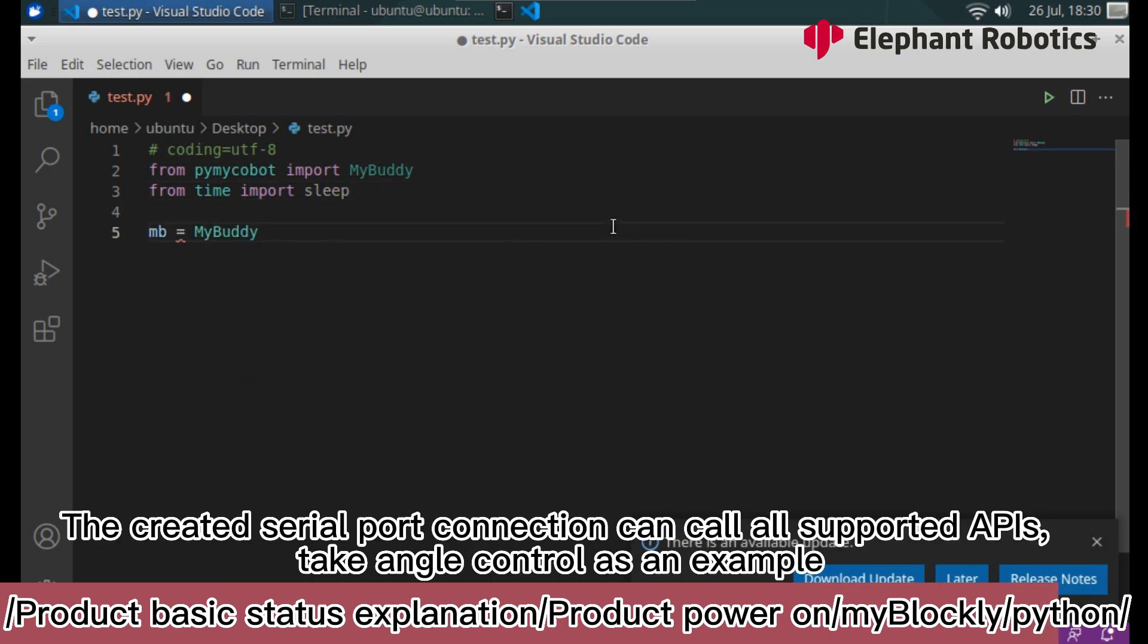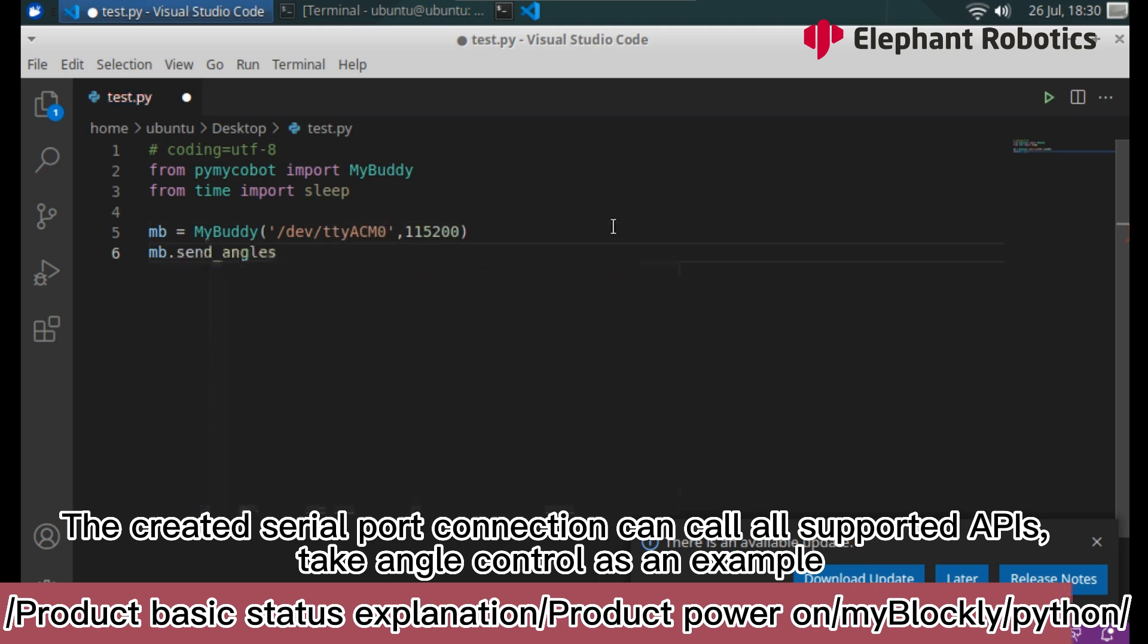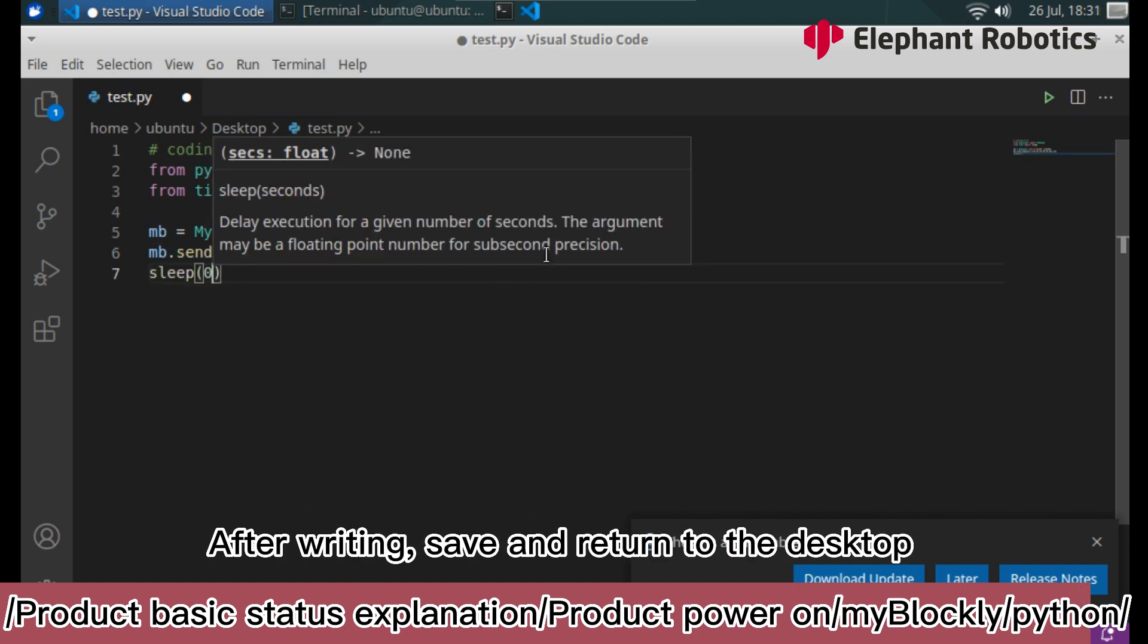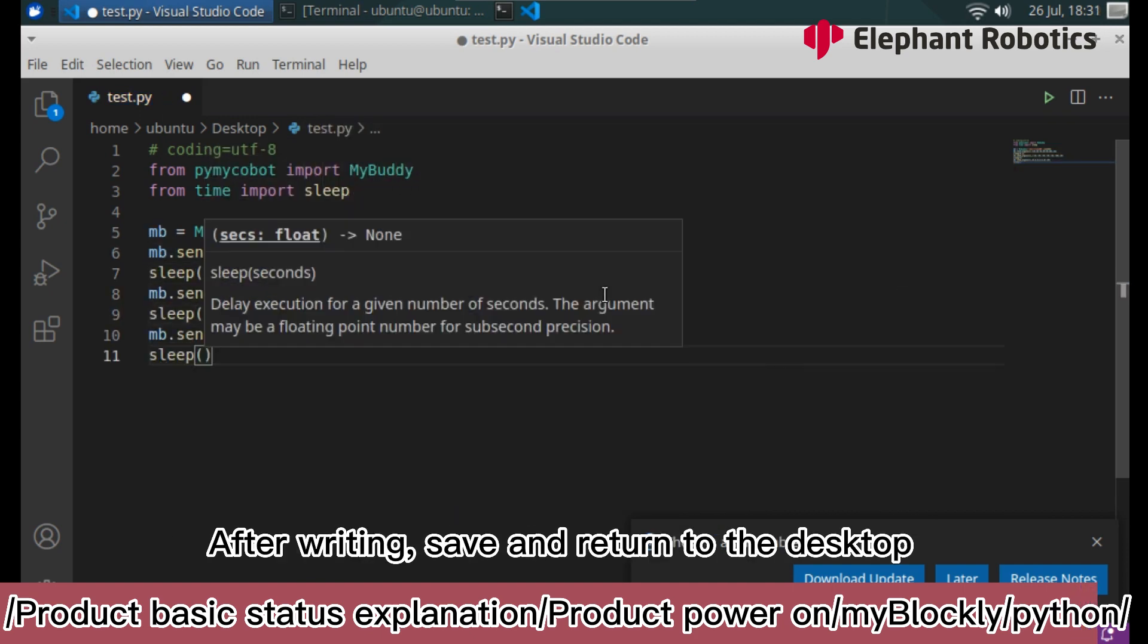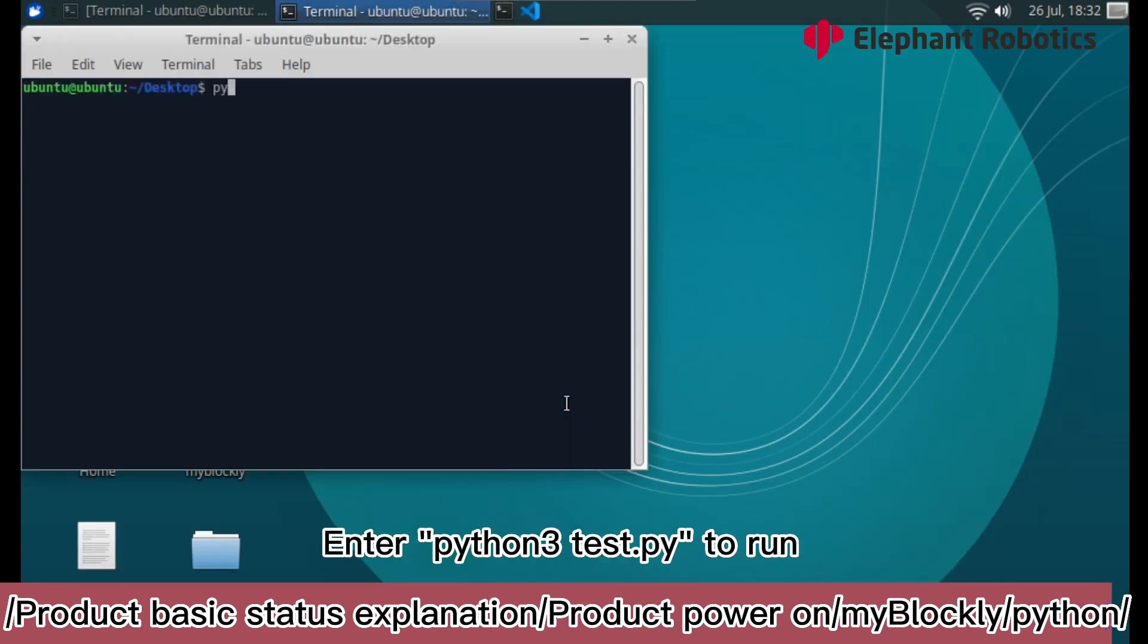The created serial port connection can call all supported APIs. Take angle control as an example. Select the angle control API. Input parameters. After writing, save and return to the desktop. Right click to open terminal. Enter python send test.py to run.